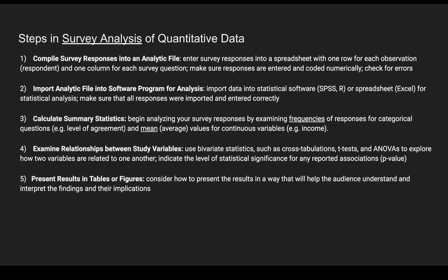Basically what you want to do is enter your survey responses into a spreadsheet with one row for each observation or respondent to your survey and one column for each survey question. You want to make sure that responses are entered and coded numerically for the most part, and you want to check for errors — this is the quality checking process.